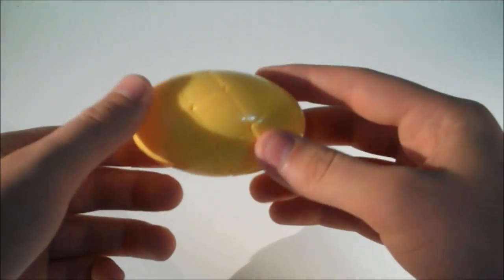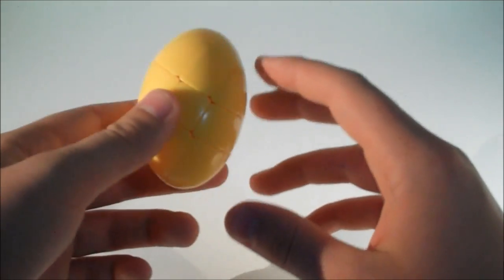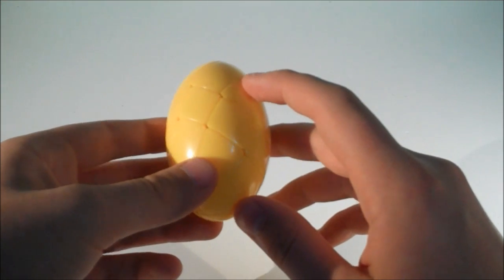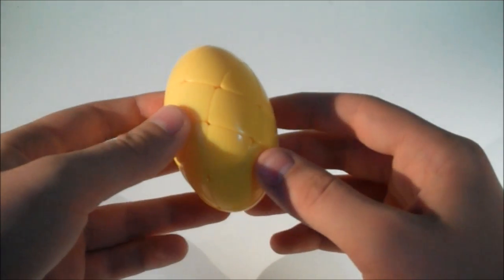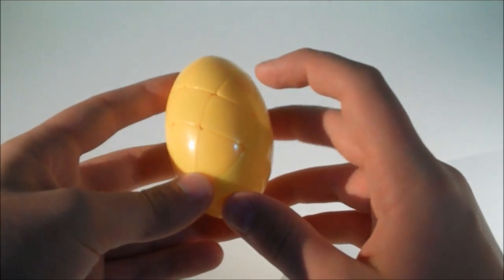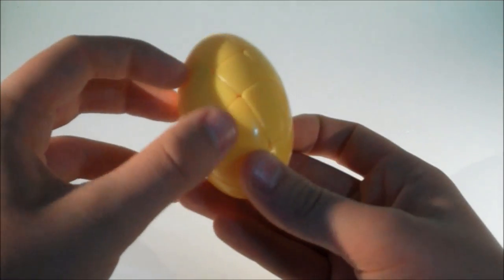This is the 3x3 egg. So this cube is just a 3x3 shape mod, so you solve it just like a 3x3. So what's difficult about this puzzle? Well, if you look closely you can see that some of the pieces are the same. So for example, this corner is the same as this, this, and this corner.